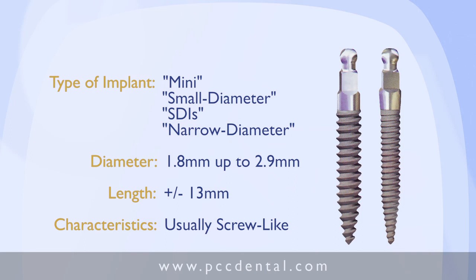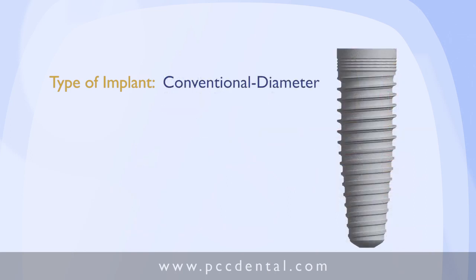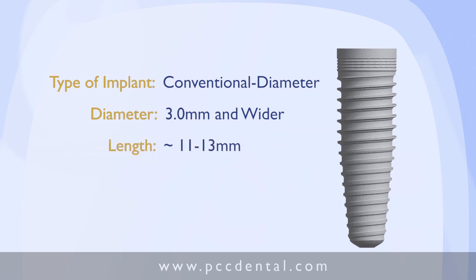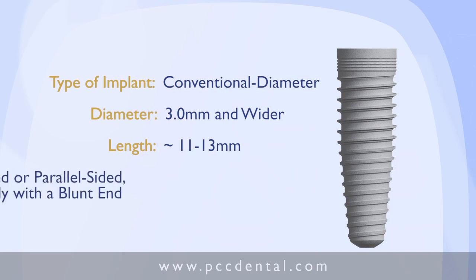Most of you are very familiar with conventional diameter implants — we're talking about 3 millimeters and wider, up to 6 and in some countries even 7 millimeters in diameter, with an average length of somewhere around 11 to 13 millimeters. These are usually tapered or parallel-sided. The one shown here is a tapered one, and it usually has a blunt end.